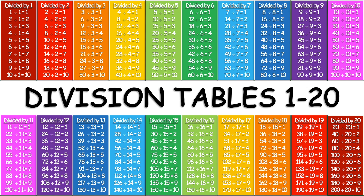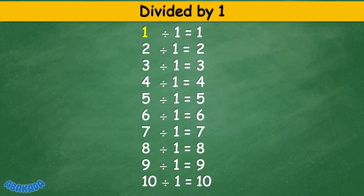Division tables 1 to 20. Divided by 1: 1 divided by 1 equals 1, 2 divided by 1 equals 2, 3 divided by 1 equals 3, 4 divided by 1 equals 4, 5 divided by 1 equals 5, 6 divided by 1 equals 6, 7 divided by 1 equals 7, 8 divided by 1 equals 8, 9 divided by 1 equals 9.